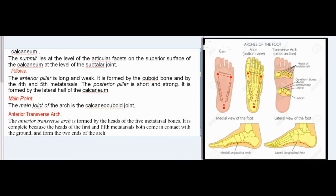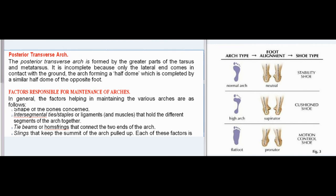Anterior transverse arch: The anterior transverse arch is formed by the heads of the 5 metatarsal bones. It is complete because the heads of the 1st and 5th metatarsals both come in contact with the ground, forming the two ends of the arch. Posterior transverse arch: The posterior transverse arch is formed by the greater parts of the tarsus and metatarsus. It is incomplete because only the lateral end comes in contact with the ground, forming a half dome which is completed by a similar half dome of the opposite foot.